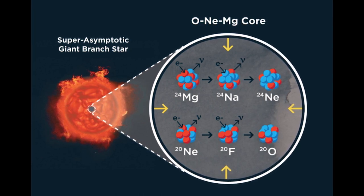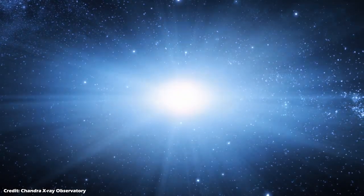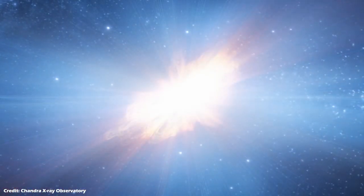As the electrons are absorbed, it reduces the outward pressure, causing the star's inner regions to collapse into a neutron star while the outer regions simultaneously blast outwards as a supernova explosion.